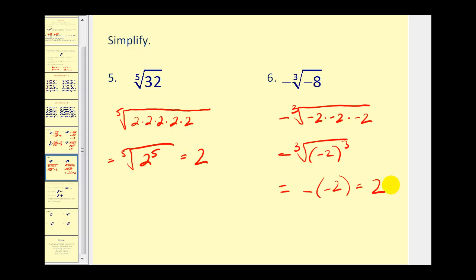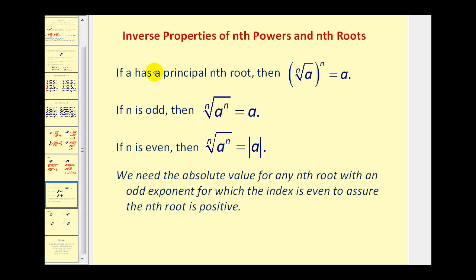There's one more topic I want to talk about. If we take the nth root of a and raise it to the nth power, this will always equal a. Finding the nth root and then raising it to the nth power are opposite operations, so they undo each other. If n is odd, this will just equal a. But if n is even, the radicand is positive, so the nth root must be positive. To assure that it is, we would have the absolute value of a, not just a. We need the absolute value of any nth root with an odd exponent for which the index is even to assure the nth root is positive.